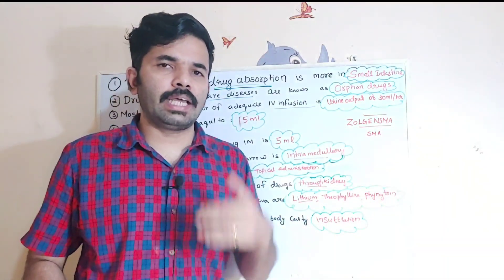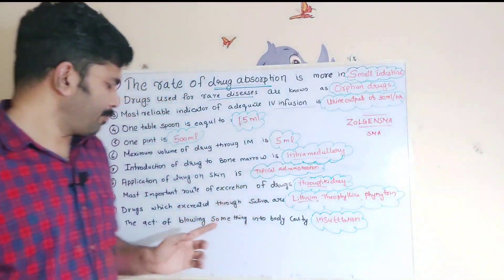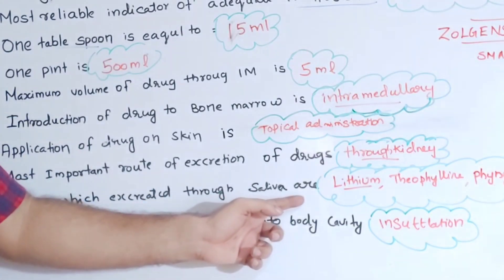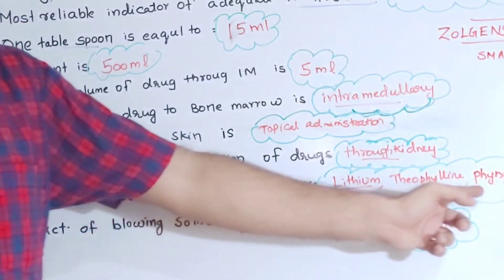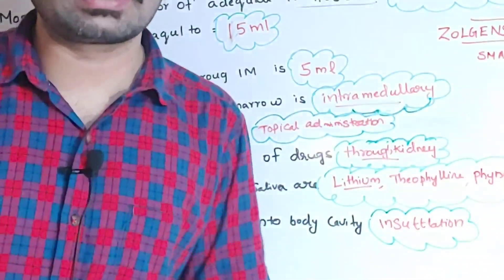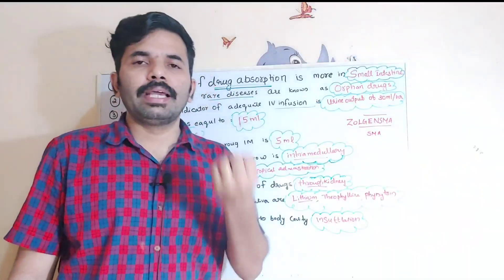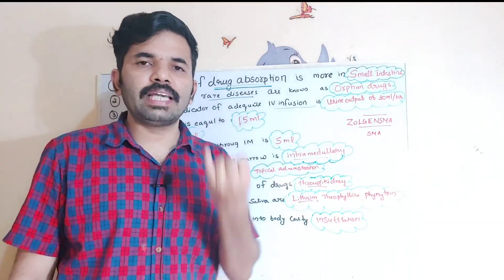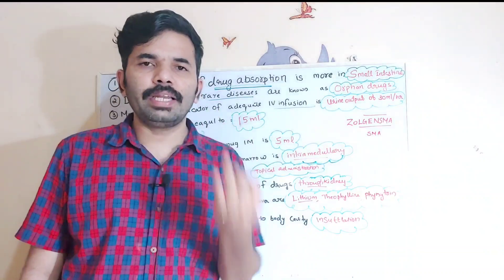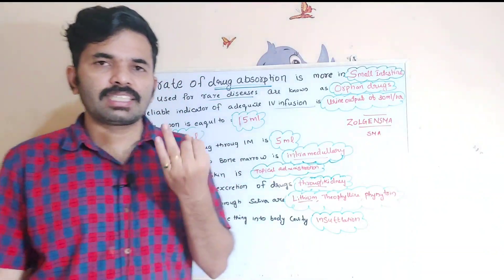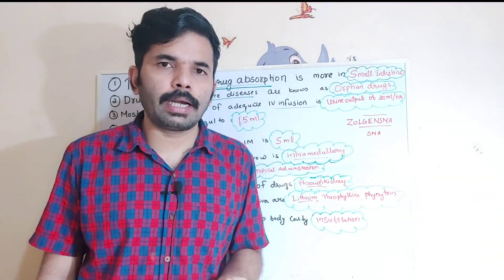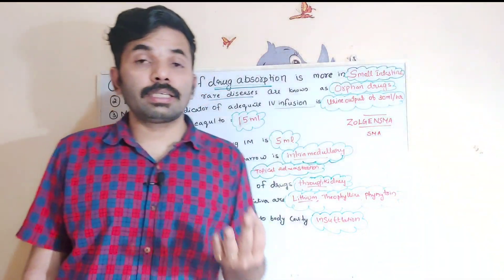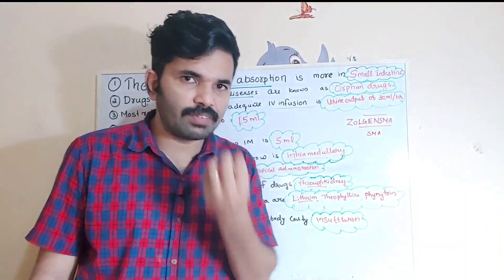The most important route of excretion of drugs is through the kidney. Drugs excreted through saliva include lithium, theophylline, and phenytoin. Theophylline is used for shortness of breathing, asthma, and COPD. Phenytoin is an anticonvulsant.